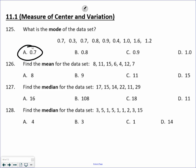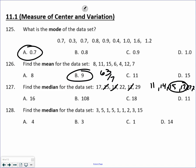Next one is the mean — you're going to add all the numbers up. 8 plus 11 plus 15 plus 6 plus 4 plus 12 plus 7 equals 63. There are 7 numbers, so 63 divided by 7, which is B. Median: in order to find the median, you have to write the numbers in order. 11, 14, 15, 17, 22, and 29. There are 6 numbers, so you're talking about in between the middle two. A is the correct answer.